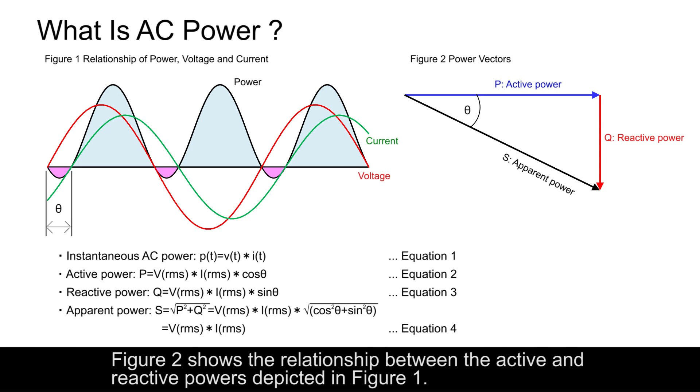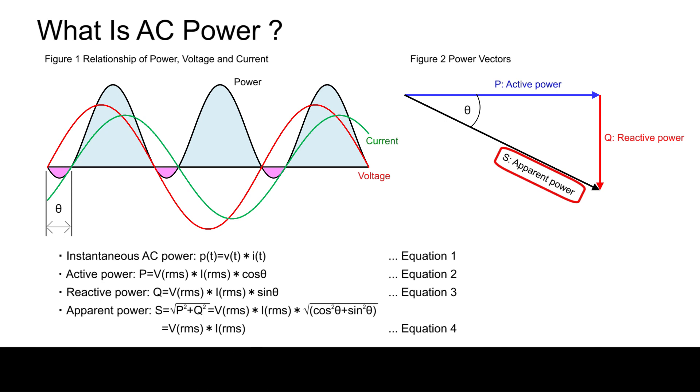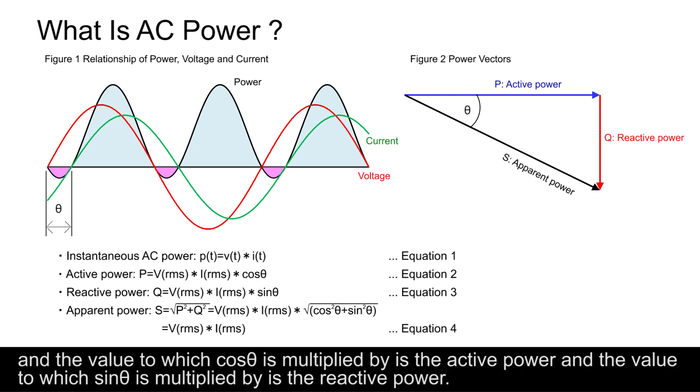Figure 2 shows the relationship between the active and reactive powers depicted in Figure 1. The product of the effective values of voltage and current is called the apparent power, and the value to which cosine is multiplied by is the active power, and the value to which sine is multiplied by is the reactive power.